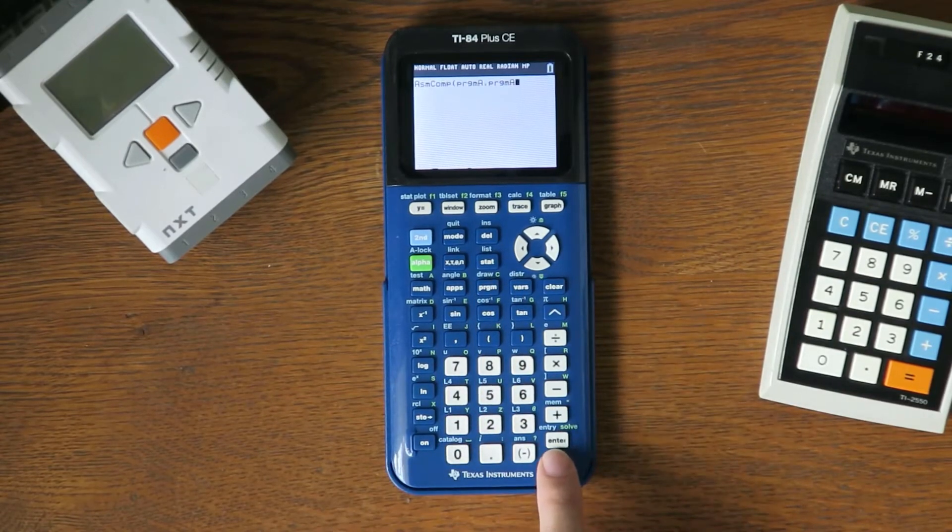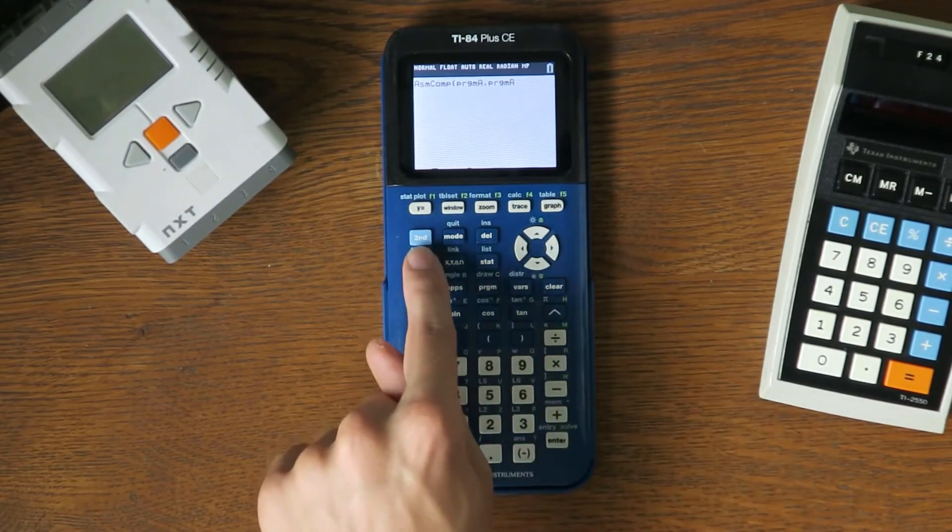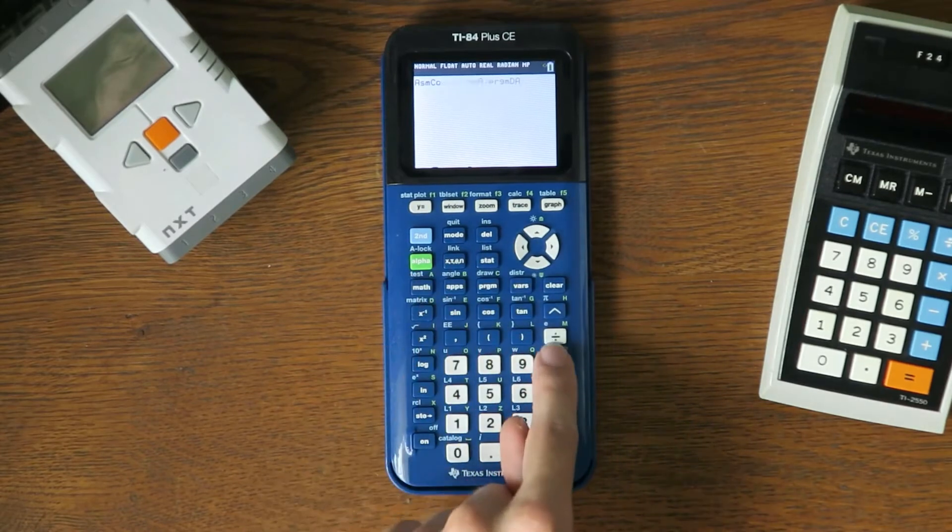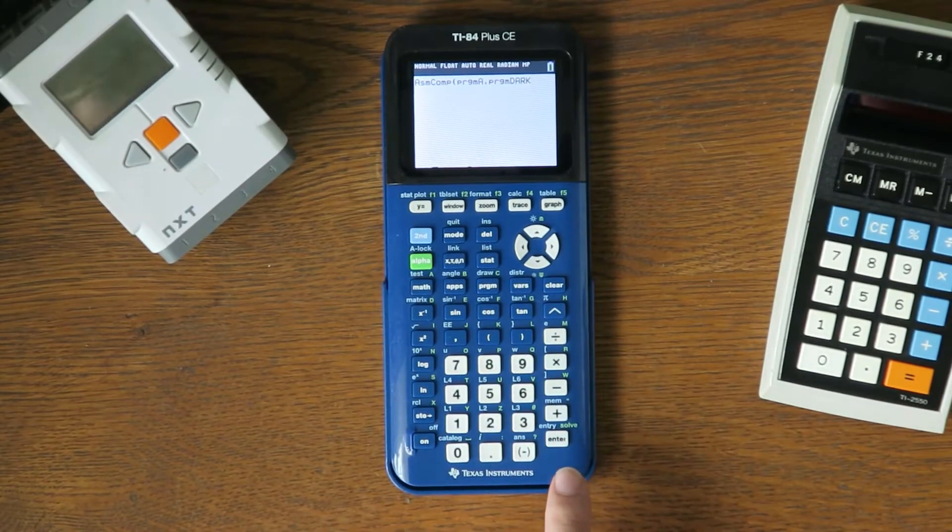This time you need to edit the name of the program A to whatever you want. I'll be renaming it to dark. Once you've renamed it, press enter.